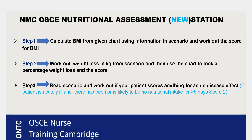Step two is working out the weight loss. We know the original weight was 50 kilos and now it's 47 kilos, so we can work out the difference — that gives you the kilogram weight loss. Then we need to work out the percentage from a chart. There is a chart to work out the percentage of weight loss, and that will give us a score as well.